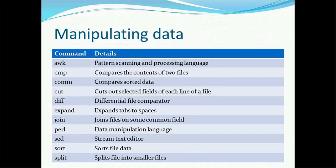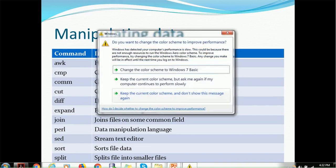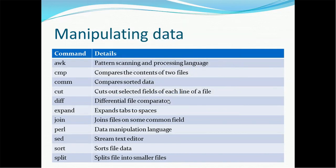Then the next command is COMM — it compresses and stores data. If you have a high volume of data and want to compress it, you can use COMM. The next useful command is CUT — it can be used to cut selected fields of each line of a file, and then you can use the PASTE command to paste to another location. DIFF is a differential file comparator to compare files. EXPAND expands tabs to spaces. JOIN joins files on common fields.